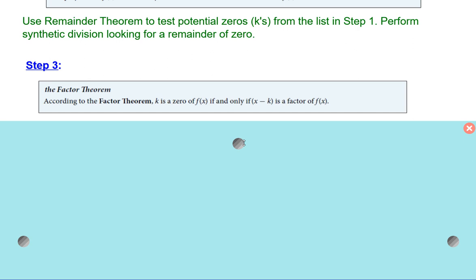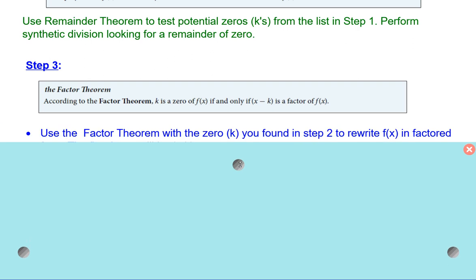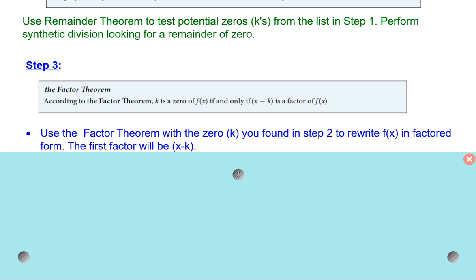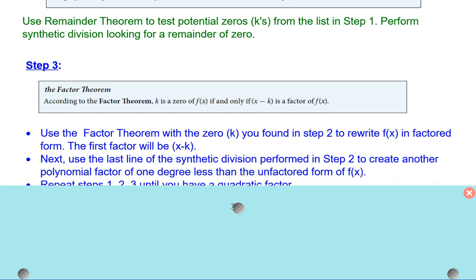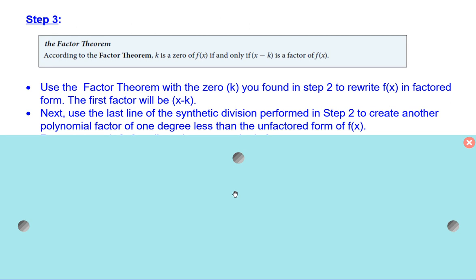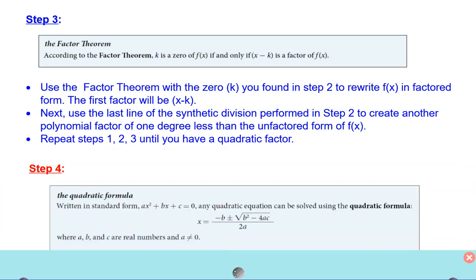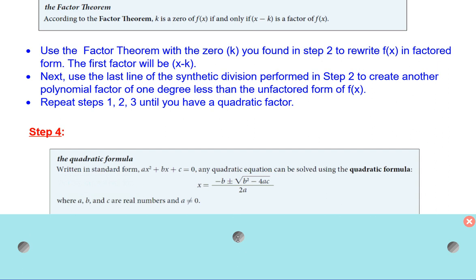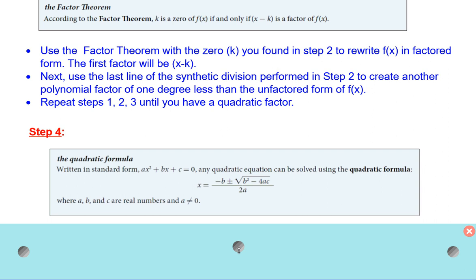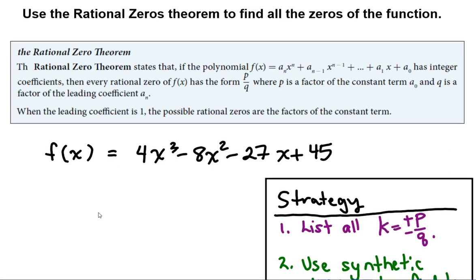Step three: we use the factor theorem, which says that once you know you have a zero k, then x minus k is a factor of the function. We use the zero found in step two and rewrite f of x in factored form — the first factor being x minus k, and then using the last line of synthetic division to form another polynomial factor. We keep repeating steps one through three until we have a quadratic factor, because then we can use the quadratic formula, or just set each factor equal to zero if it factors easily.